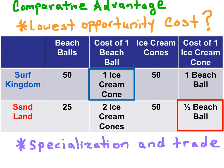To determine the opportunity cost of producing a beach ball, we make beach balls the denominator. So we take 50 ice cream cones divided by 50 beach balls for Surf Kingdom, and we get an opportunity cost of one ice cream cone. So every time Surf Kingdom produces one beach ball, they're sacrificing one unit of ice cream. In Sandland, we take 50 ice cream cones divided by 25 beach balls, and we have an opportunity cost of two units of ice cream for every beach ball that they produce. Because Surf Kingdom has the lower relative opportunity cost in beach ball production, they have the Comparative Advantage.